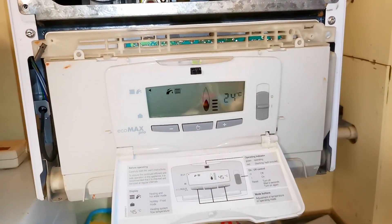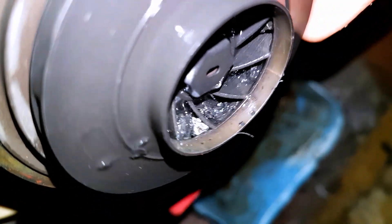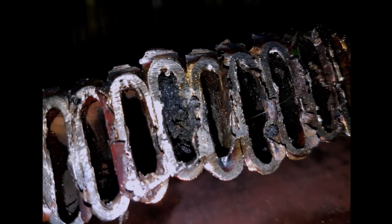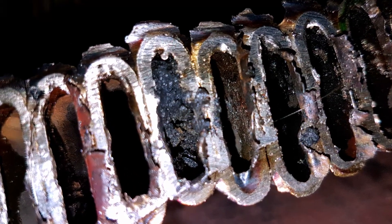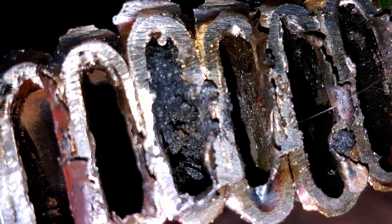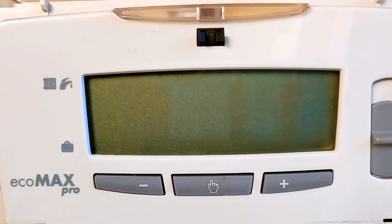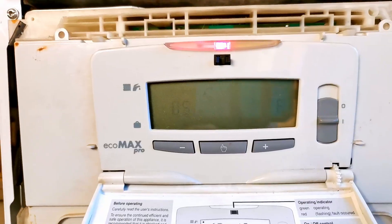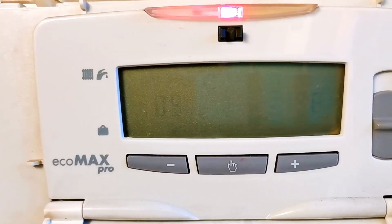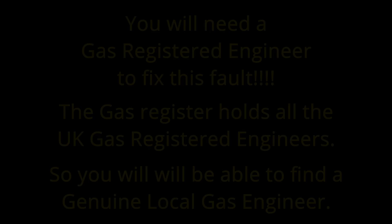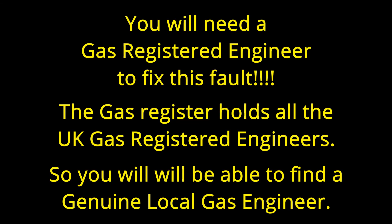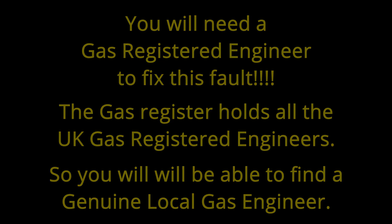There is no guarantee with any of this, as there could be other faults on the system and the heat exchanger still has poor flow through it. If you have this F5 fault, hopefully you now know a little bit more about it — call that gas-registered engineer to come and help you out. As you can see, it is not as straightforward as just resetting a thermostat. To find a gas-registered engineer, I've left a link in the description which will take you to the gas register where you can find a genuine local gas safe registered engineer.